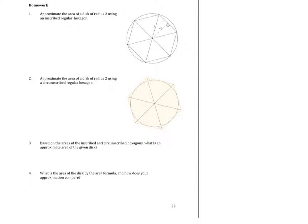Unit 7 Lesson 4 Homework. Approximate the area of a disk of radius 2 using an inscribed regular hexagon.